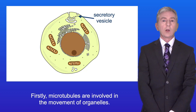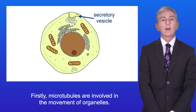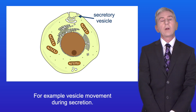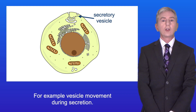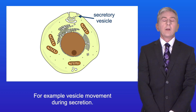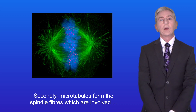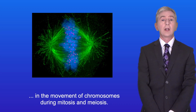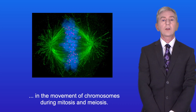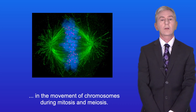Firstly, microtubules are involved in the movement of organelles — for example, vesicle movement during secretion. Secondly, microtubules form the spindle fibers which are involved in the movement of chromosomes during mitosis and meiosis.